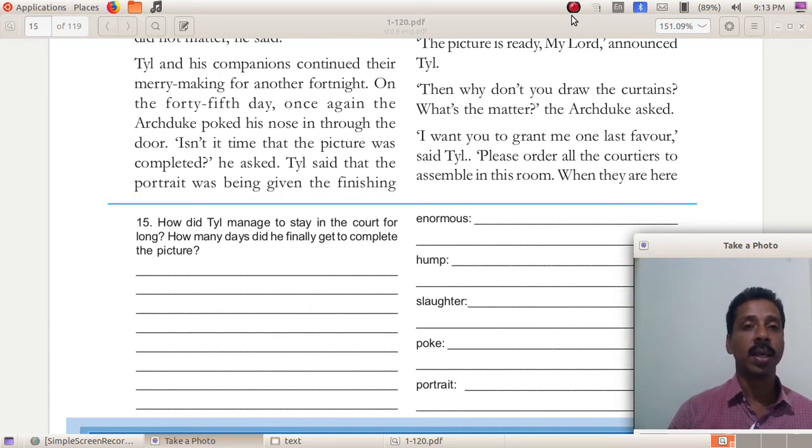Till was in a very difficult situation. He understood that he cannot satisfy both the Archduke and the courtiers. However, it was not possible to draw the picture. But he asked the Archduke to show him the wall where he had to draw the picture. He asked for thick curtains to protect his painting, all these things showing that he was drawing the picture.